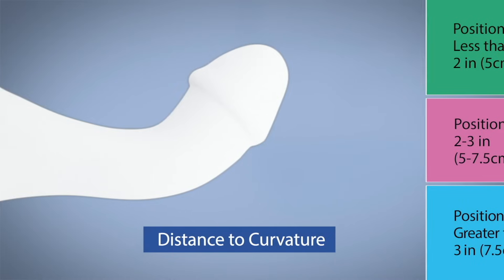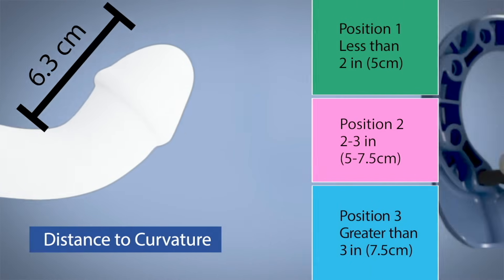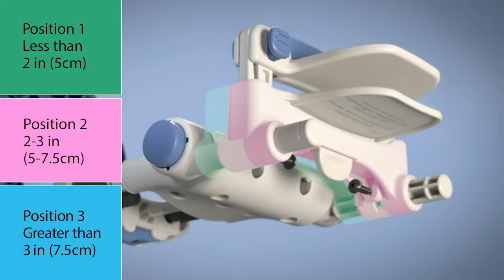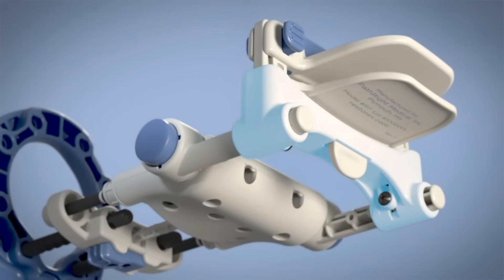Finally, adjust the location of the clamp housing on the clamp arm based on the distance from the tip of your penis to the middle of the curvature, as shown. To move the clamp housing to position two or three, gently remove the screws, slide the housing along the clamp arm, and insert and tighten the screws. Do not over-tighten.